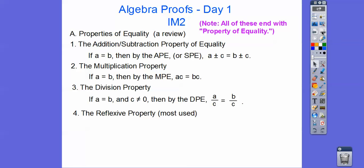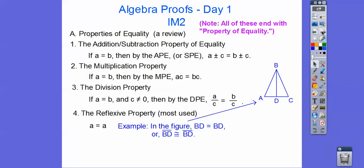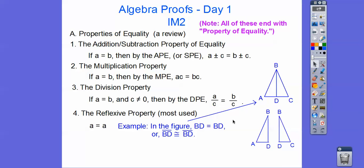The reflexive property in geometry is one of the most used properties. It just says anything equals itself. In this figure there are actually three triangles. Looking at the two small triangles — the one on the left and the one on the right — we can say BD on this triangle equals BD on the other triangle. If you're using a congruency symbol, put segment bars on top. So either the measure of BD equals the measure of BD, or segment BD is congruent to segment BD — by the reflexive property. These are interchangeable and mean the same thing.